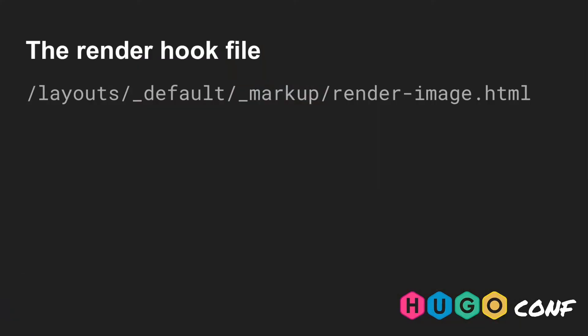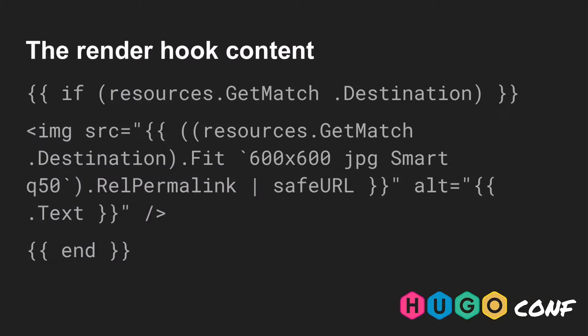With this code, we can resize images in our layout. But what about content images? For images in the markdown, you can use a render hook — a file that describes or overwrites how markdown images are handled. To use this approach, you should create the following file and put this logic inside. Note that we use .destination for the source of the original image, and .text for the alt or alternative text defined in the markdown. Once you've added the render hook, all images in your Hugo project can and will be resized.